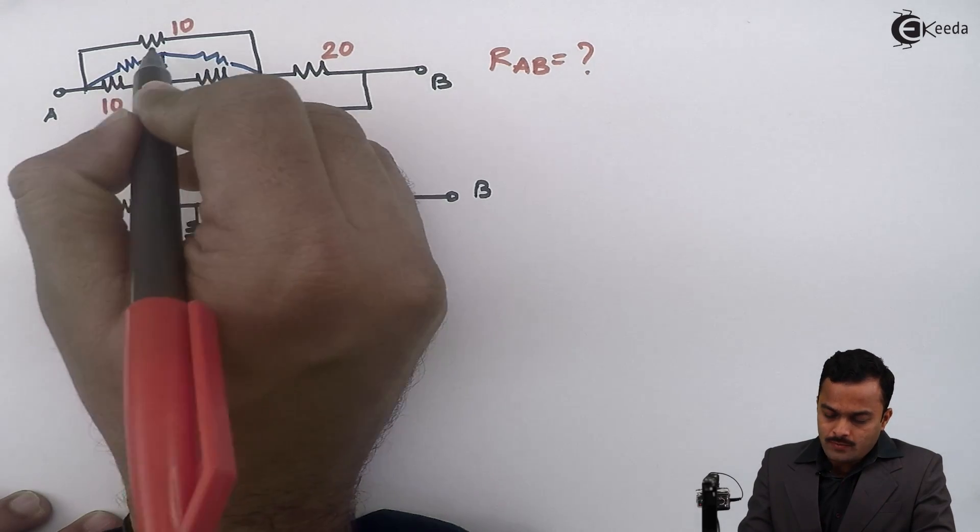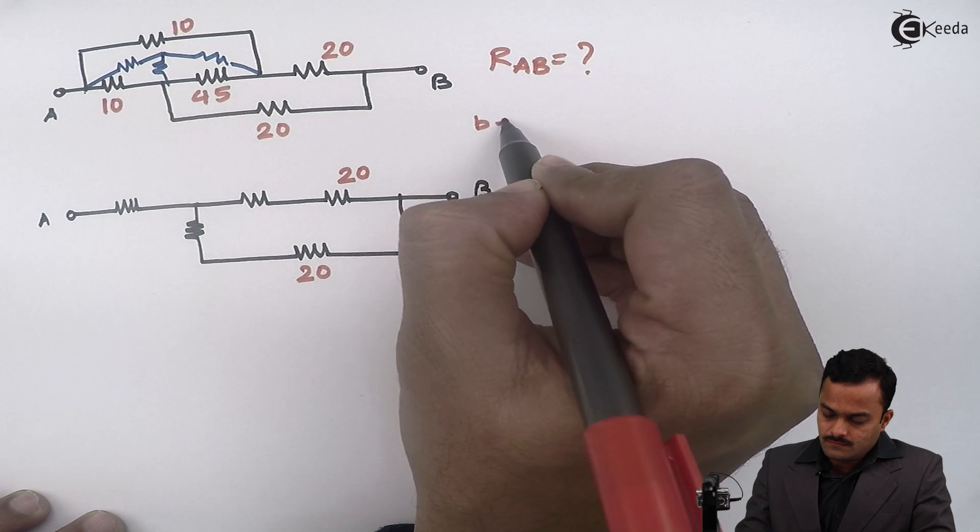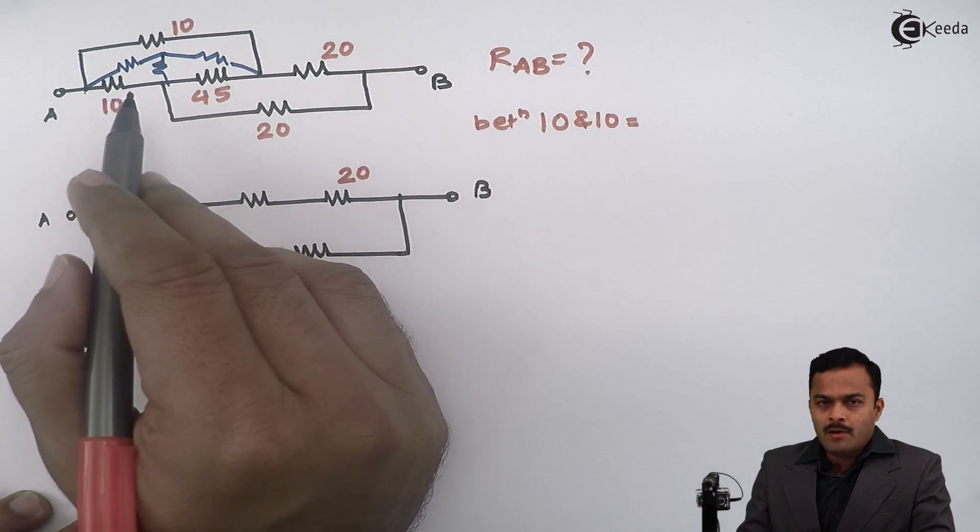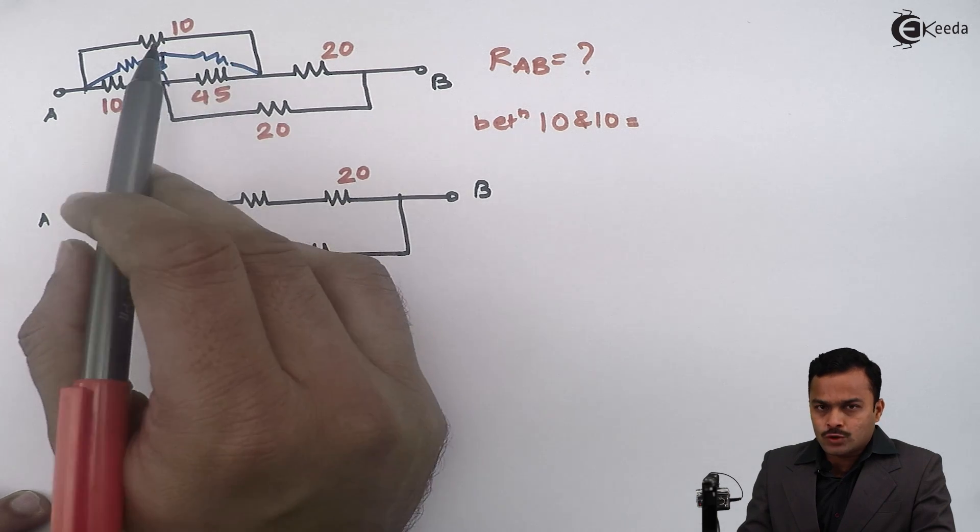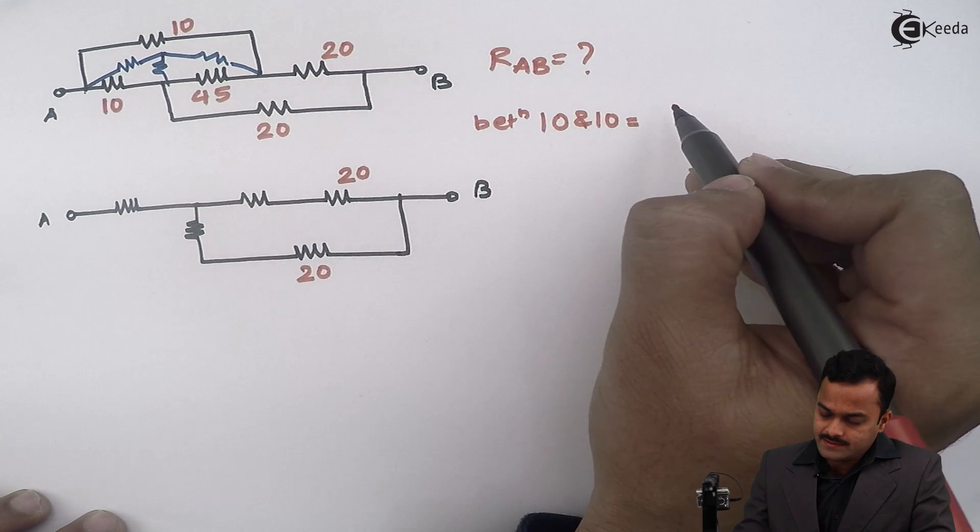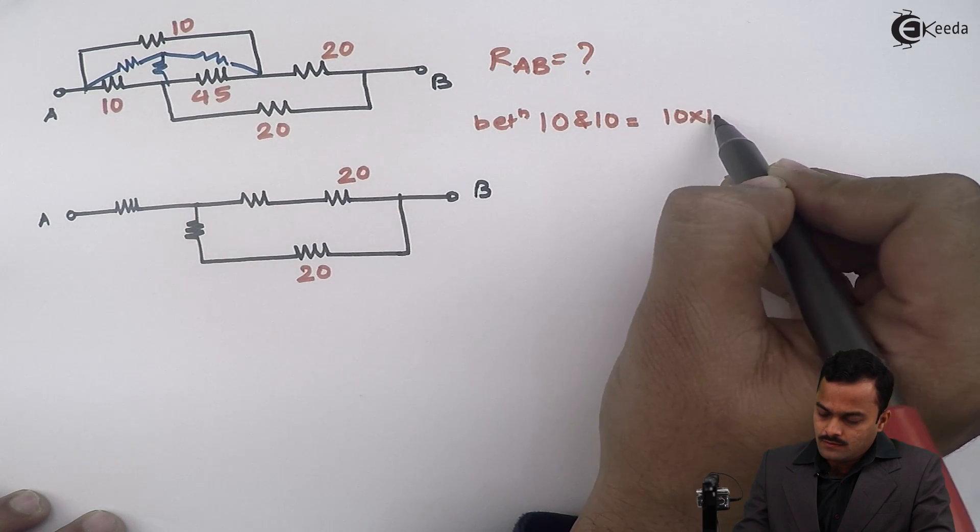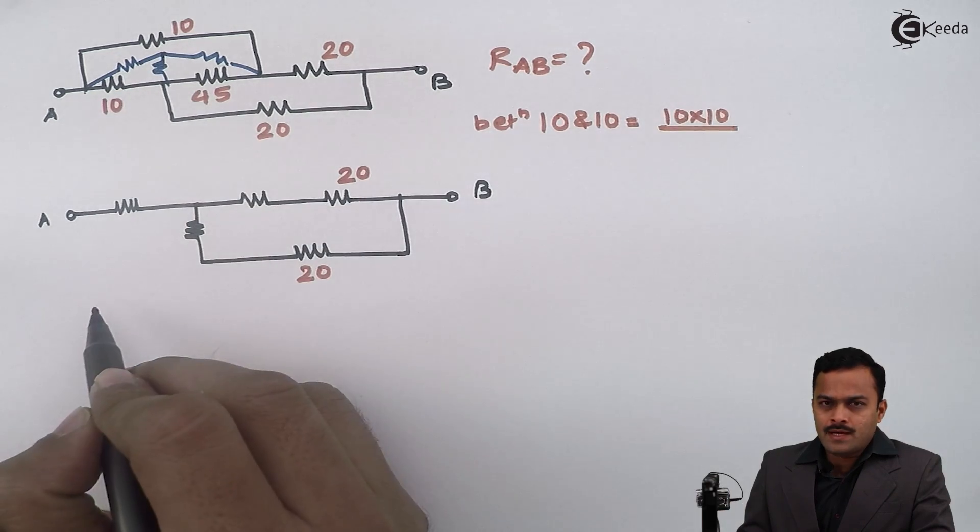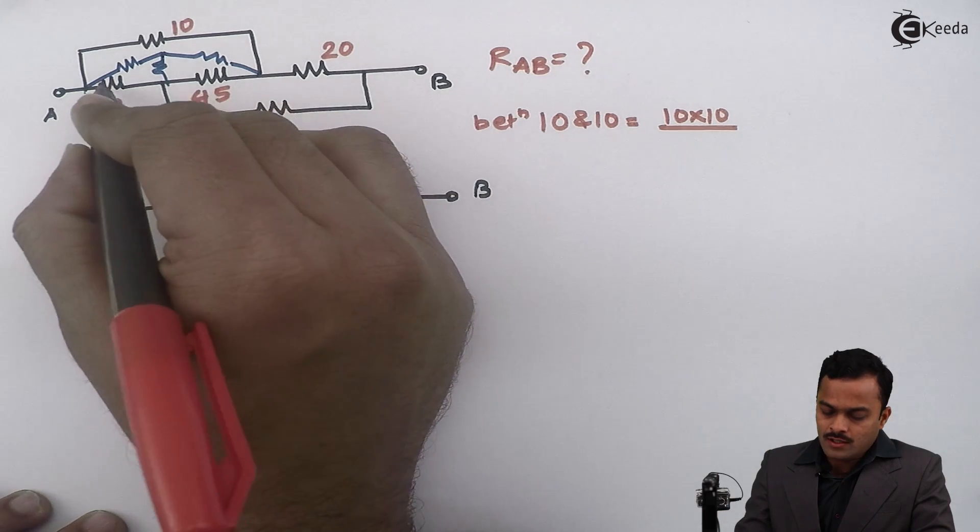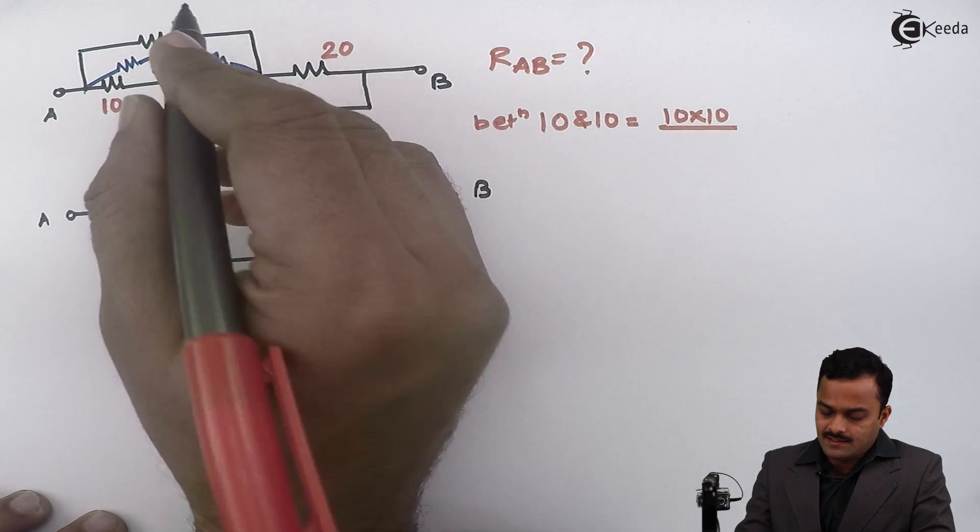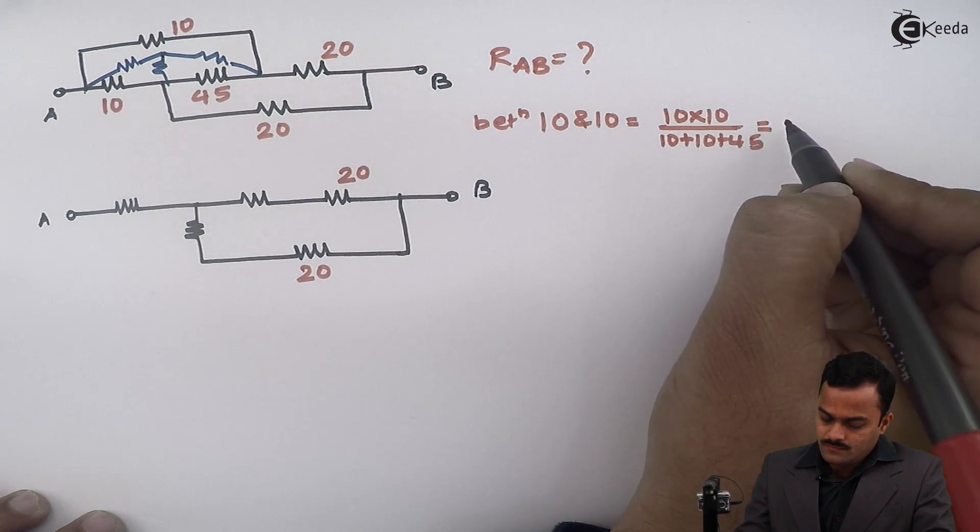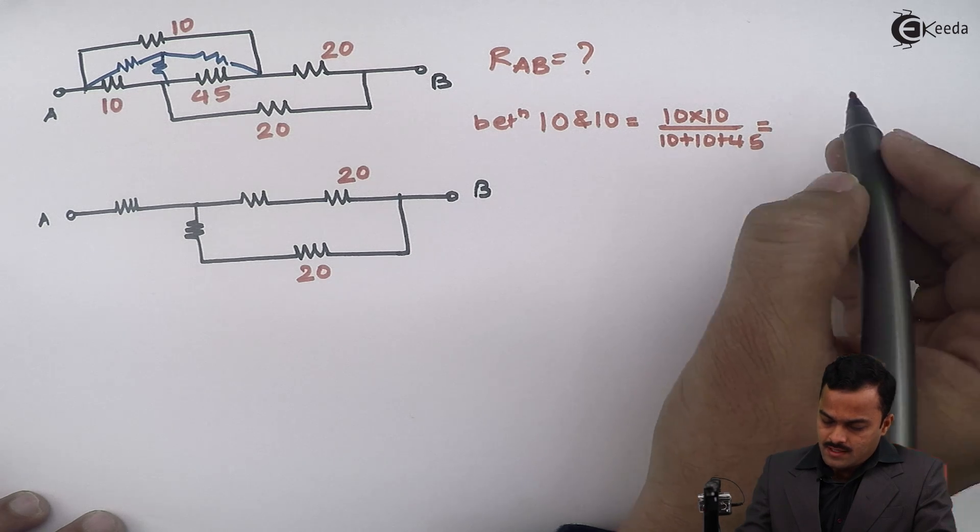So between 10 ohm and 10 ohm, remember we are converting delta to star. Whenever we are converting delta to star, the formula is we need to multiply the resistors divided by addition of all the three resistors connected in delta. So after solving this I will get an answer.